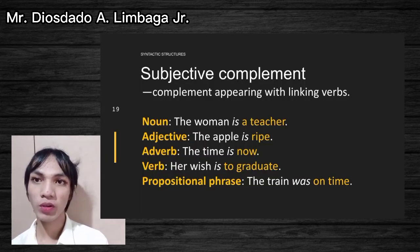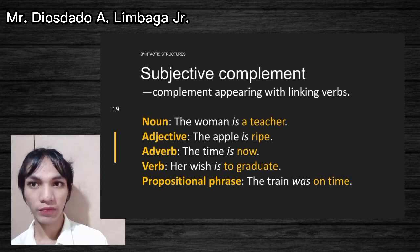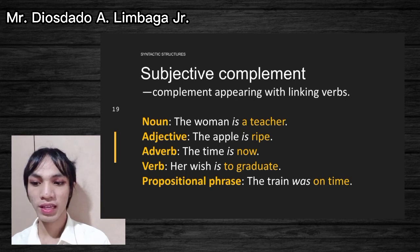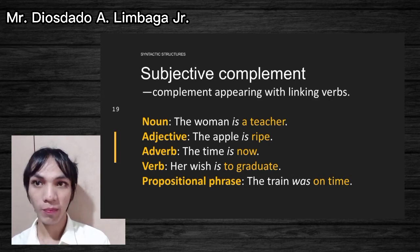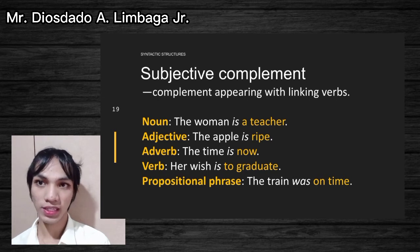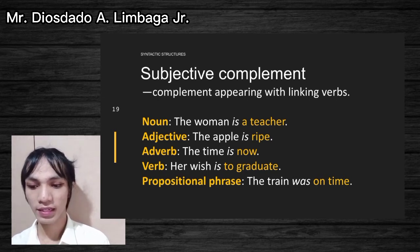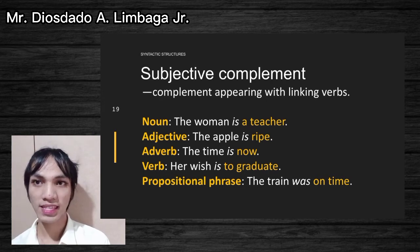Since intransitive verbs have no complement, we won't focus on them. Types of complement — the first is the subjective complement, which appears with linking verbs. For noun: 'The woman is a teacher' — 'is' is the linking verb and 'a teacher' is the subjective complement. For adjective: 'The apple is ripe' — 'ripe' is the subjective complement. For adverb: 'The time is now' — 'now' is the subjective complement.